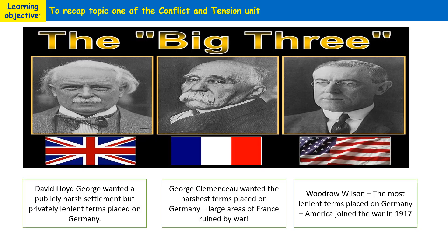I'm going to start off by recapping who these individuals were who made up the Big Three at the Paris Peace Conference. Starting off with the man on the left-hand side, we've got David Lloyd George, who was Prime Minister of the United Kingdom at the end of the First World War. Then next we're going to talk about Georges Clemenceau, who was the French Prime Minister, and then Woodrow Wilson, who was the US President.